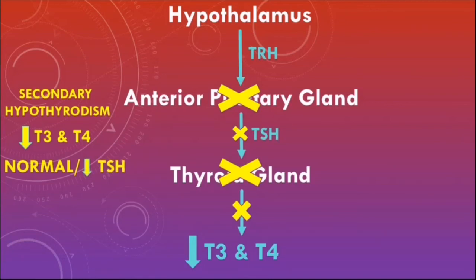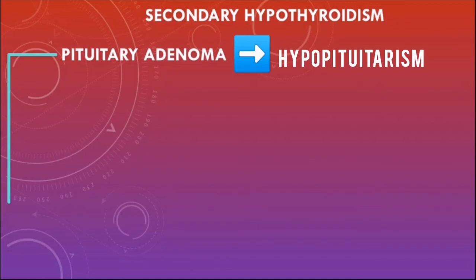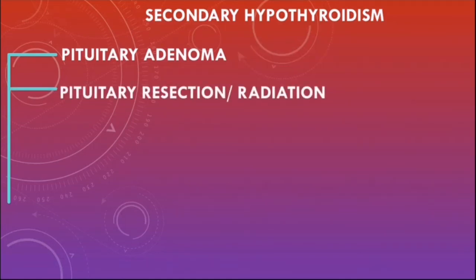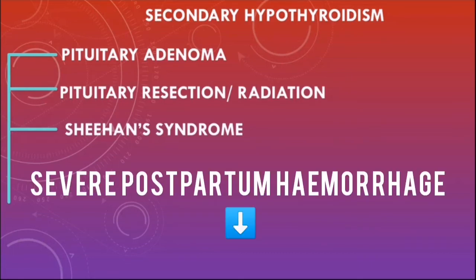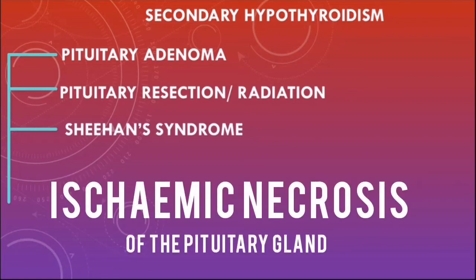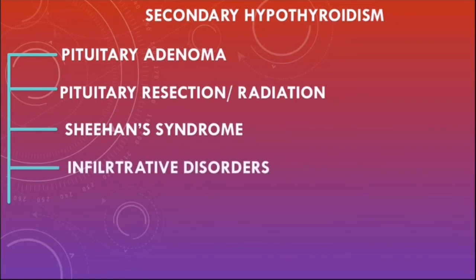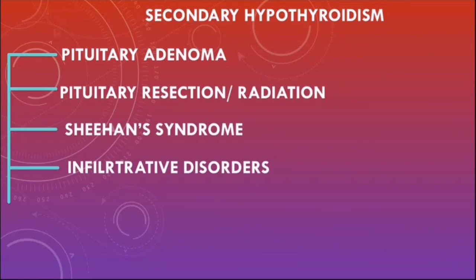Causes of secondary hypothyroidism include a pituitary adenoma leading to hypopituitarism, pituitary resection, and radiation. Sheehan syndrome is another important cause — severe postpartum hemorrhage leads to hypovolemic shock and ischemic necrosis of the pituitary gland. Infiltrative disorders such as hemochromatosis, sarcoidosis, and amyloidosis can also lead to secondary hypothyroidism, as can pituitary apoplexy.